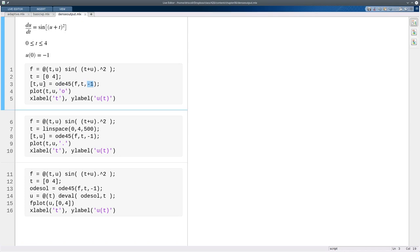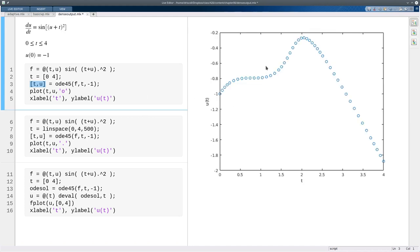The output from this is two vectors of the same length. One of them is discrete values of the t variable. The other is discrete values of the solution. And so that's what we get as the result. These t values are chosen automatically, and we'll get into that in some more detail later on.